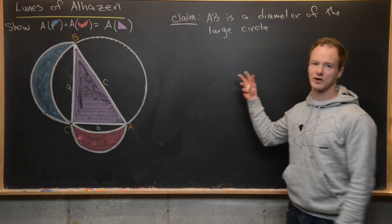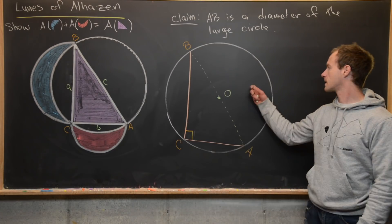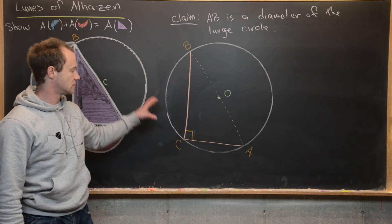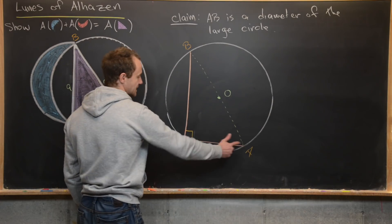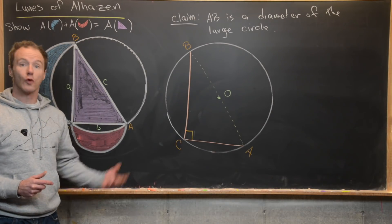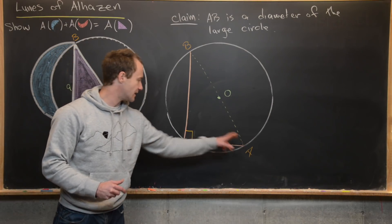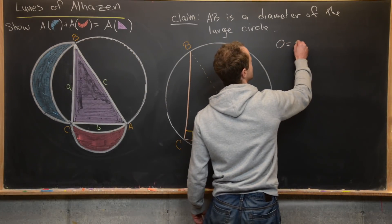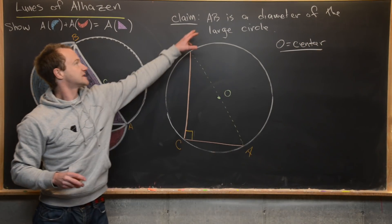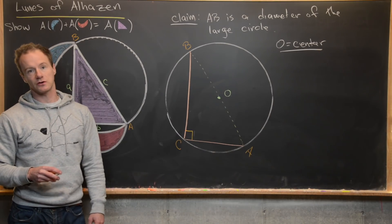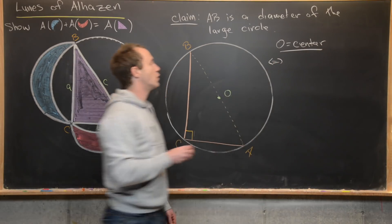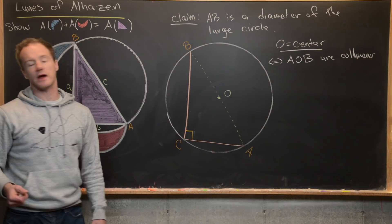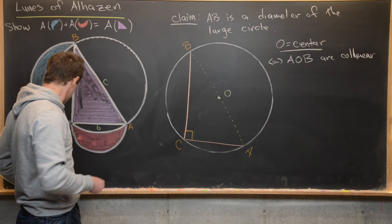We're going to need a new picture to prove this sub-claim. We've got a circle with two legs forming a right triangle inside it — line segments BC and AC, which are perpendicular to each other. If O is the center of the circle, then AB being the diameter of the large circle will follow if we can show that A, O, and B are collinear — that is, they all lie on the same line.